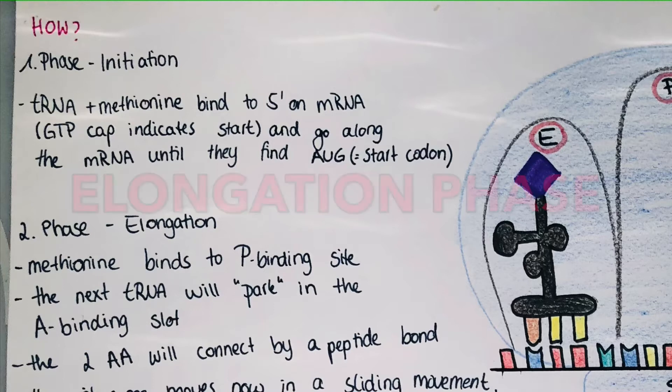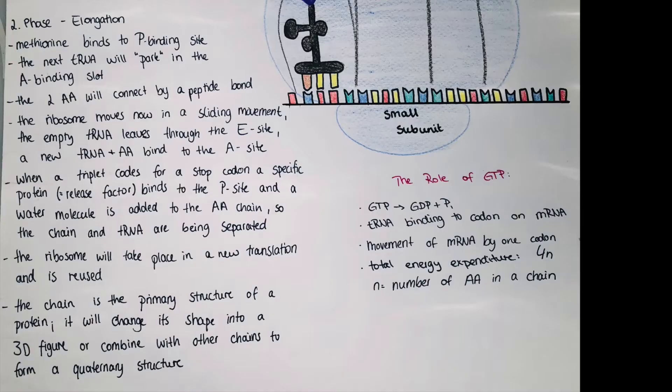This is also where the elongation phase starts. The next tRNA will bind next to the first tRNA that we used in the initiation phase and will park in the A binding slot until both these amino acids are connected by peptide bond. Now a movement will happen which is described differently in different literature. So in some sources it says that the ribosome moves and in other sources it says that the mRNA moves. So just ask your professor what they want to hear in the exam.